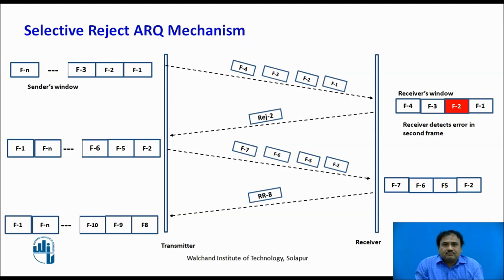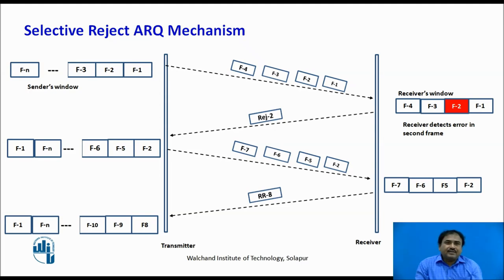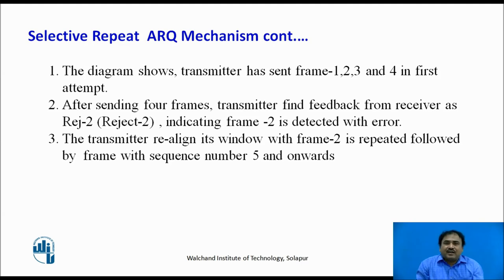The second method is Selective Reject ARQ. Again, the sender plans to send frames F1, F2, F3, and F4. The same scenario occurs — F2 has an error. The receiver gives feedback as REJ2, where REJ indicates rejection and 2 is the frame number with the error. When this feedback reaches the sender, the sender only repeats frame F2 and continues sending new frames F5, F6, and onwards. Only the erroneous frame is retransmitted. This method is called Selective Repeat or Selective Reject ARQ.